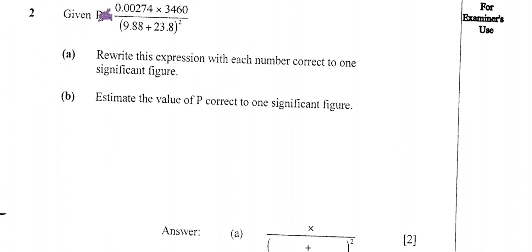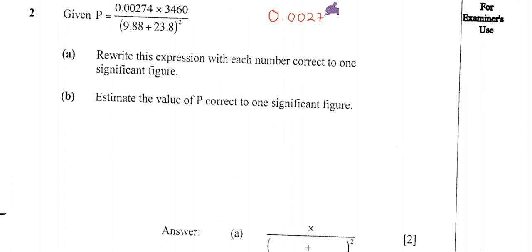Number two says that given P equal to this expression, part A says rewrite this expression with each number correct to one significant figure. So we are going to write each number correct to one significant figure. For this first number, zero point zero zero two seven four — if we want to write it correct to one significant figure, we count one number from the first non-zero digit. The first non-zero here is two.